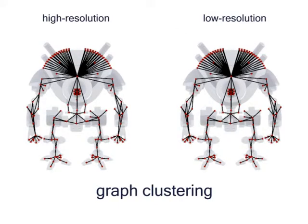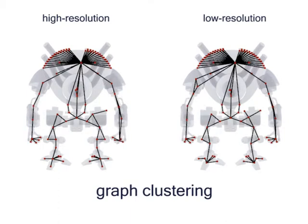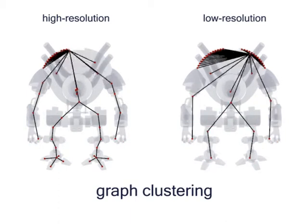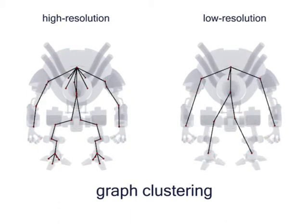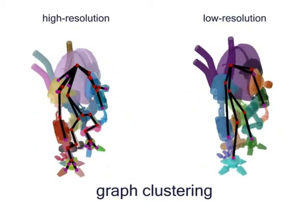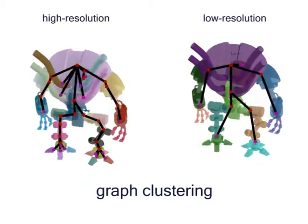The contact graph is then simplified to a tree by clustering nodes. Here we see how the clustering algorithm iteratively generates a coarser representation of the contact graph. Finally, only a simple tree structure remains.